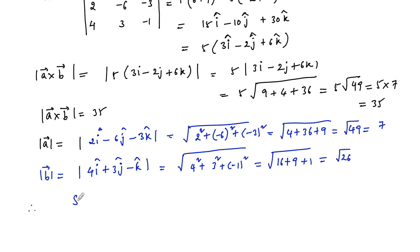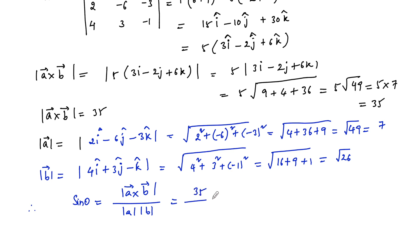Therefore, sin θ = |a × b| / (|a| × |b|) = 35 / (7 × √26) = 5 / √26. Therefore we can conclude with the answer: sin θ = 5 / √26.